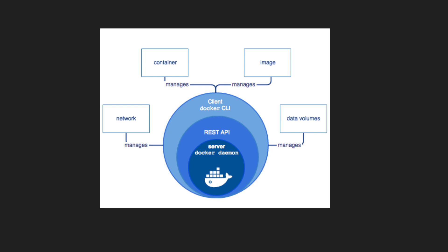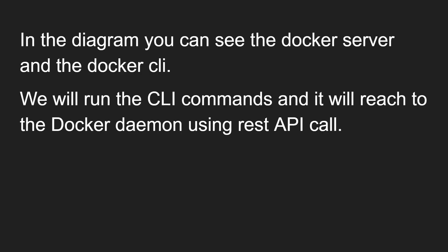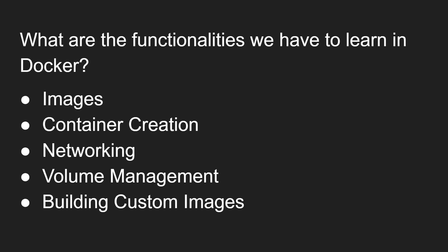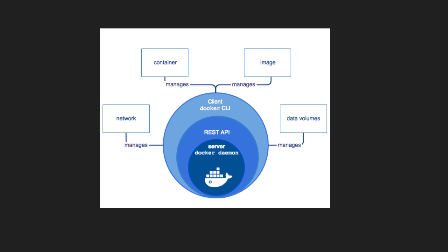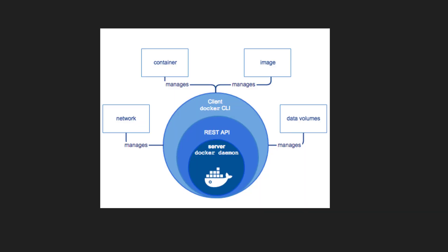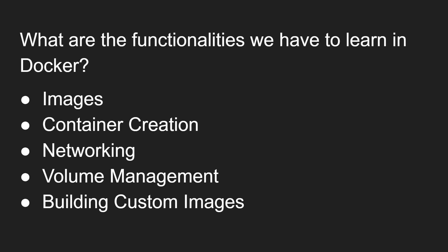Here is the Docker architecture. At the bottom you have the Docker server, which is nothing but the Docker daemon. Between the client and daemon, you have REST API and Docker CLI. The Docker CLI communicates to the Docker daemon using the REST API. The Docker daemon manages data volumes, images, containers, and networks — these are the core functionalities. The four major functionalities we need to learn are: images and container creation, networking, volume management, and building custom images using Dockerfiles.